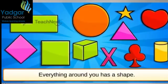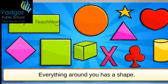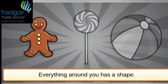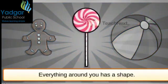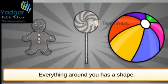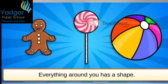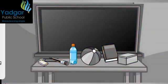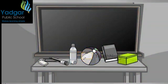You can see shapes everywhere around you — your cookies, your candies, your toys. Look at the pencil, book, eraser, bottle, blackboard, ball, or box. They all have some shape.